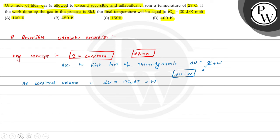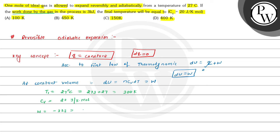Now, the given data: temperature T1 is equals to 27 degree centigrade, which is equals to 273 plus 27, so it is 300 Kelvin. The value of CV, that is heat capacity at constant volume, is given as 20 joule per Kelvin per mole. Work done by the gas — work done by the system is negative — so W is equals to minus 3 kilo joule, that is minus 3 multiplied by 10 to the power 3 joules.